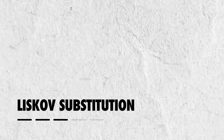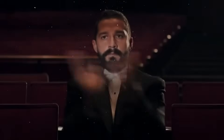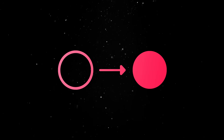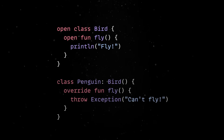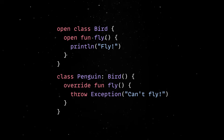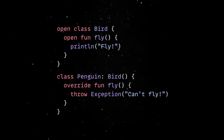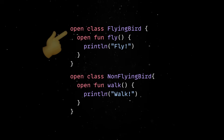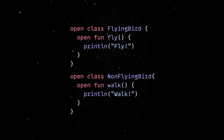The Liskov Substitution Principle enforces that derived classes can seamlessly replace their parent classes without breaking your code. This seems like common sense — of course a subclass should behave like its parent — but it's actually really easy to unintentionally violate this constraint. For instance, if you define a bird class with a fly method and then create a penguin subclass, penguins are birds but they can't fly. If you override the fly method to throw an exception, you've just broken the Liskov Substitution Principle. The solution is to design your hierarchies more carefully — create separate classes like flying bird and non-flying bird, so you don't force subclasses into behaviors they can't support.